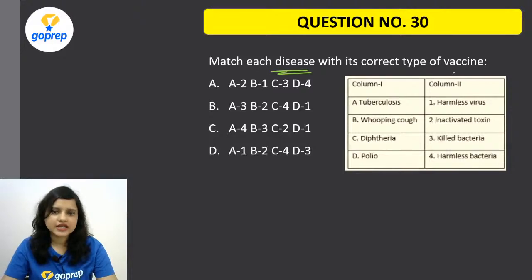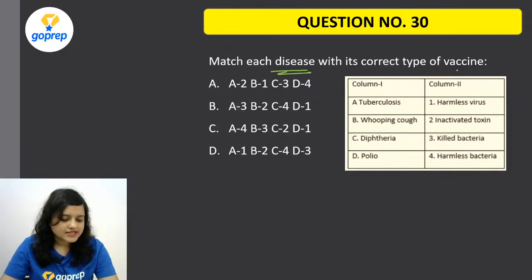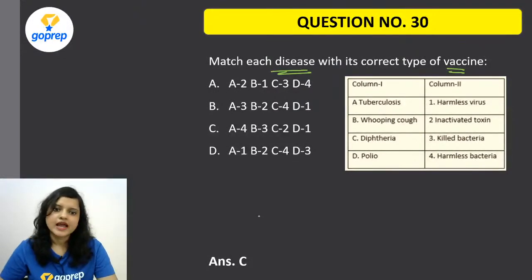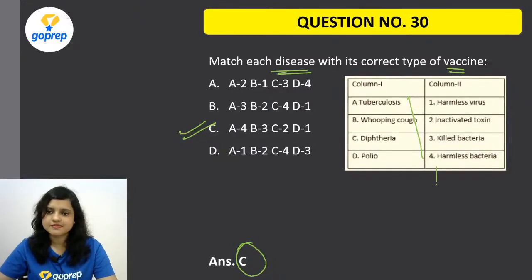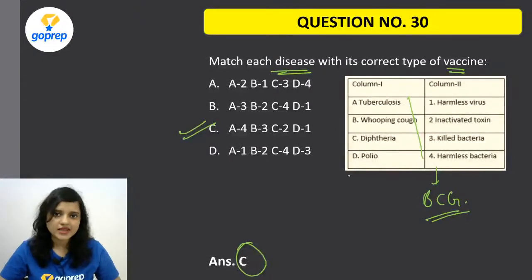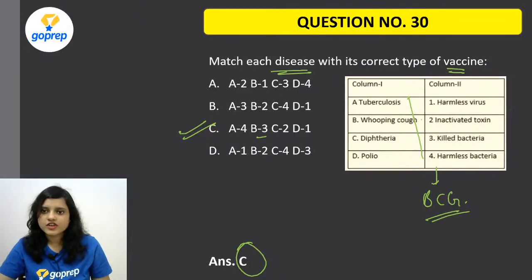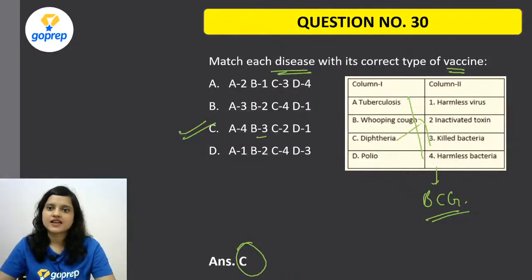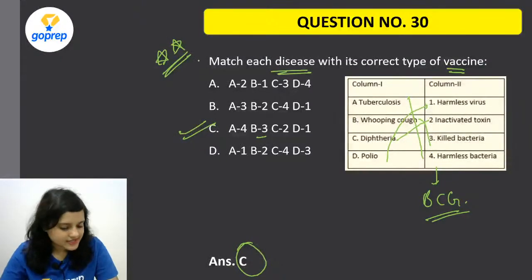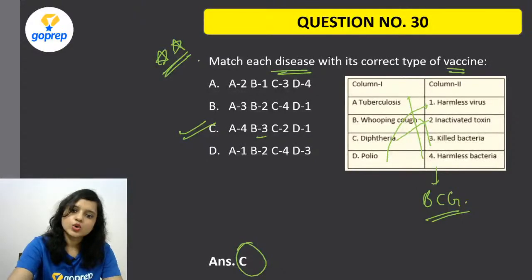Question number 30: Match the diseases with the correct type of vaccine. The correct option is C. For tuberculosis, harmless bacteria — BCG (Bacillus Calmette–Guérin), which is similar to mycobacteria, is used. For whooping cough (pertussis), killed bacteria are used. For diphtheria, inactivated toxin is used. For polio, harmless virus is used. This is a very important question — it revises all vaccines in one go.